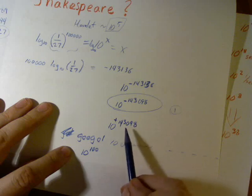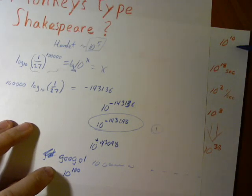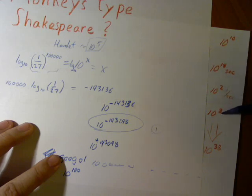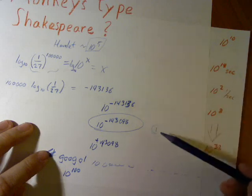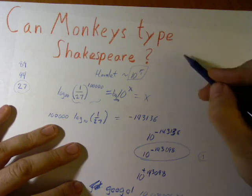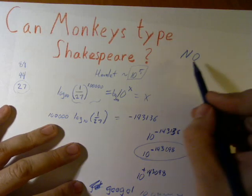If it takes this many universes with this many monkeys typing this entire time this fast looking for any book in the Library of Congress. Essentially, our question is can monkeys type it? No. No. Not really. In all practical senses the answer is no.